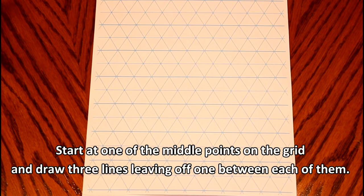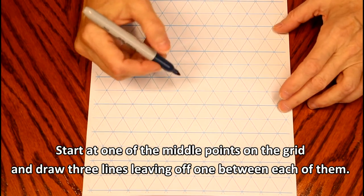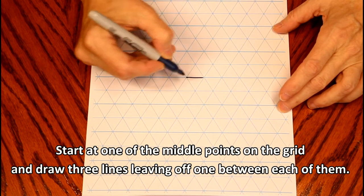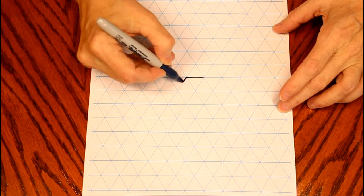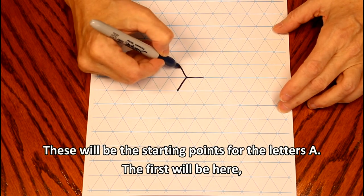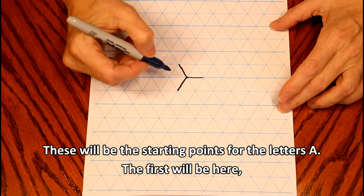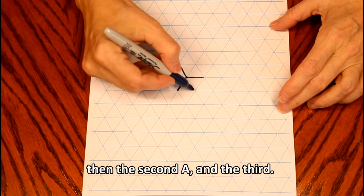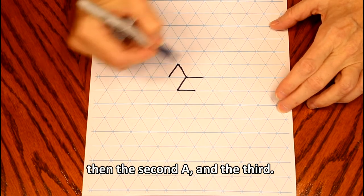Start at one of the middle points on the grid and draw three lines, leaving one between each of them. These will be the starting points for the letters A. The first will be here, then the second A, and the third.